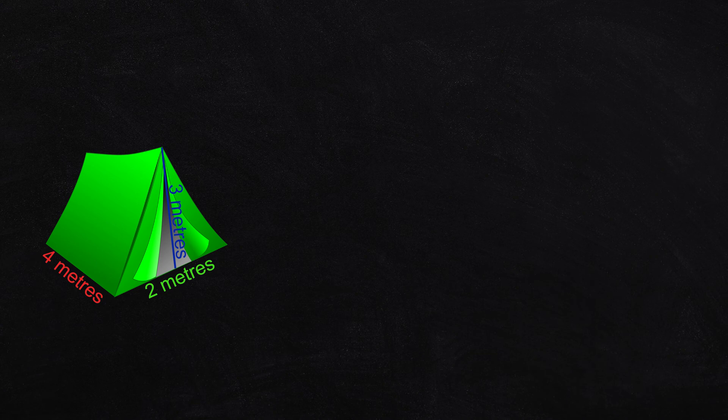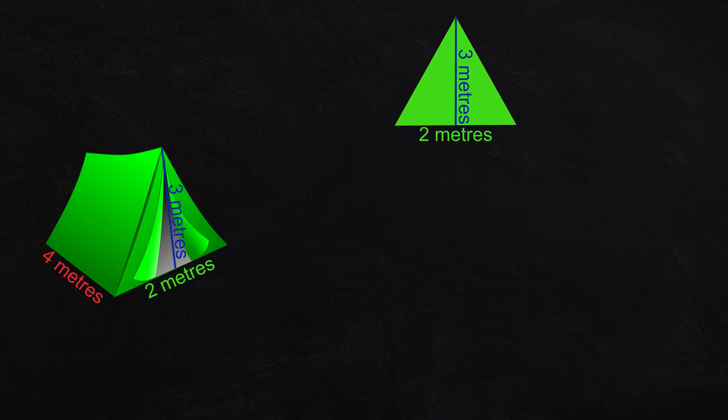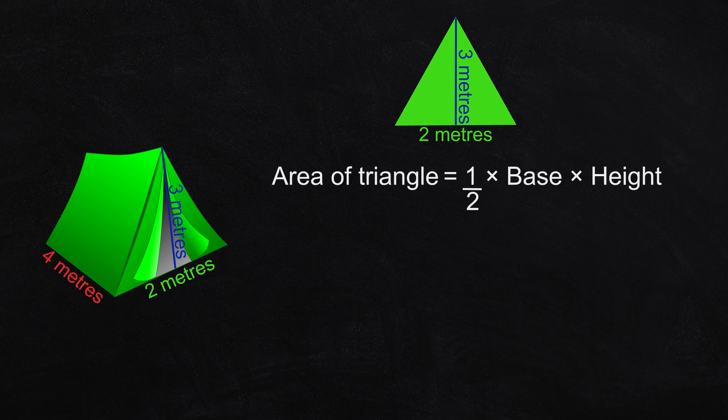Let's work out the volume inside this tent that is in the shape of a triangular prism. The ends are triangles of the same shape and size. The first rule is: area of triangle equals one half multiplied by the base multiplied by the perpendicular height. That's one half times two times three, which is three square meters.